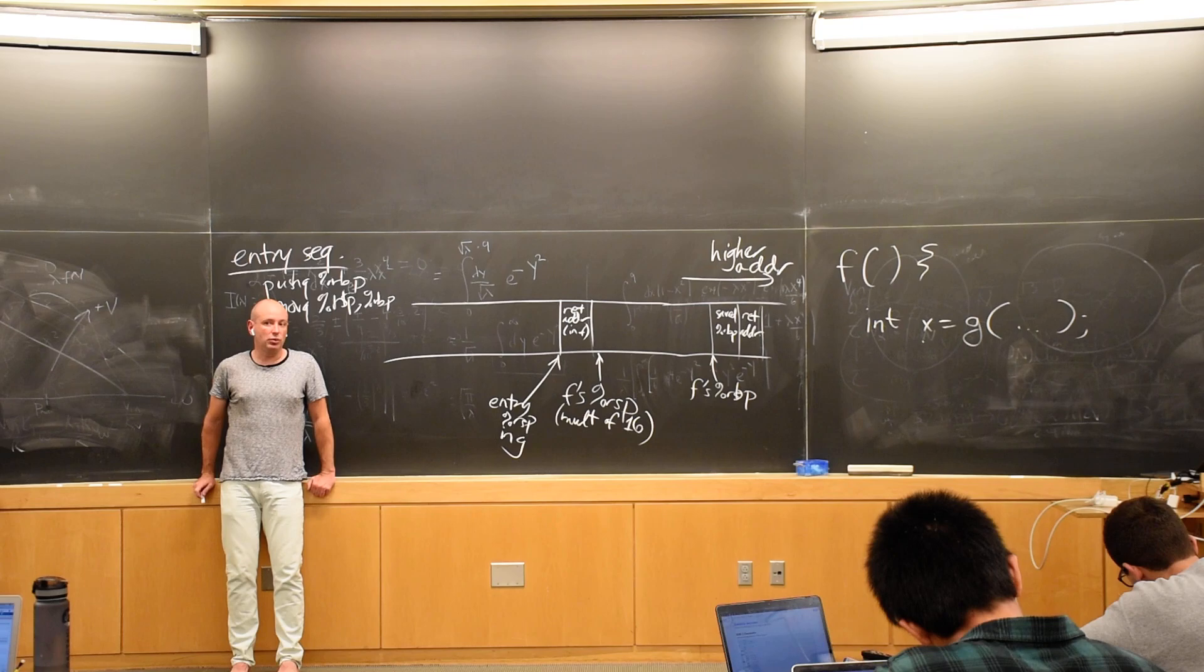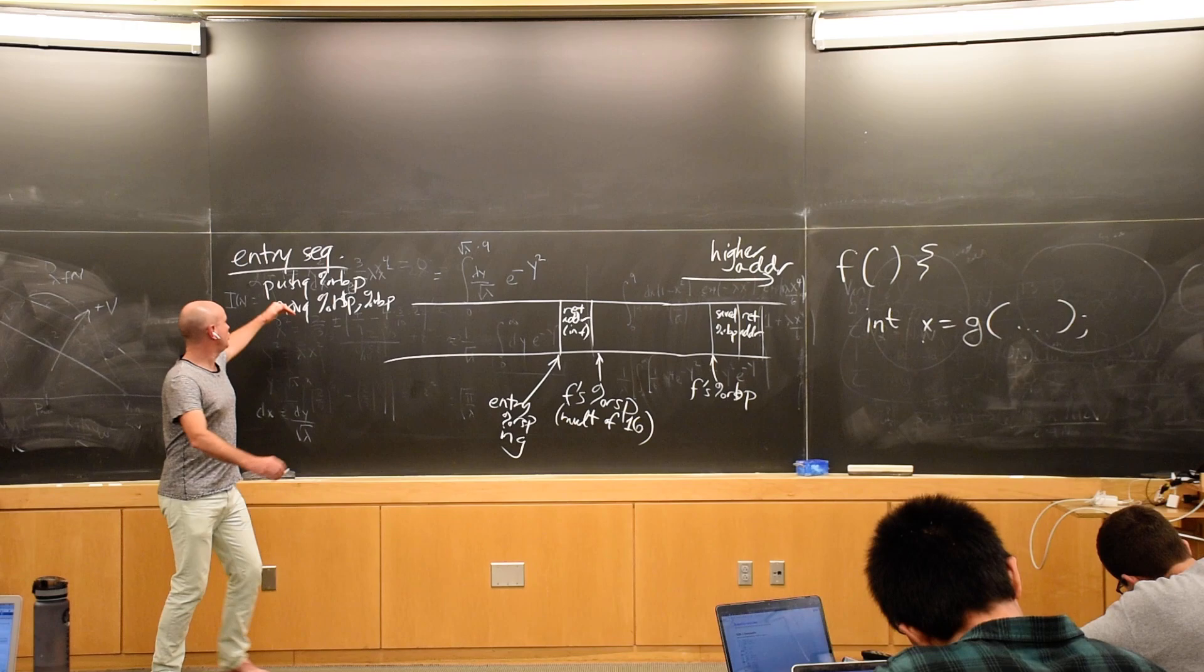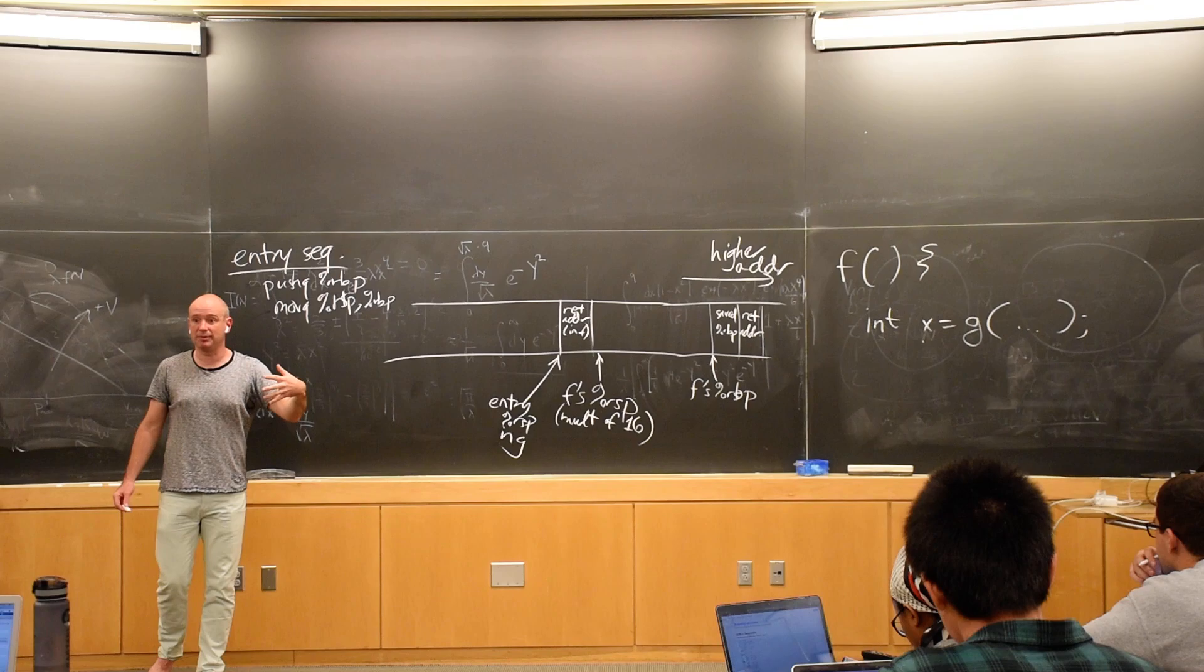Now you, so this is like the entry sequence. If I were to continue through this entry sequence, one of the things that we might find in G, is we might find G doing push Q, RBP, move Q, RSP, RBP. If G was a complex function.